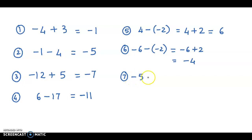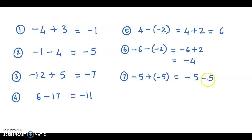Next example: minus 5 plus minus 5. Whenever you have a positive sign next to a negative sign, it means subtract. So we have minus 5 minus 5. You took away 5 and then took away another 5, so you have taken away 10 in total. The answer is minus 10.